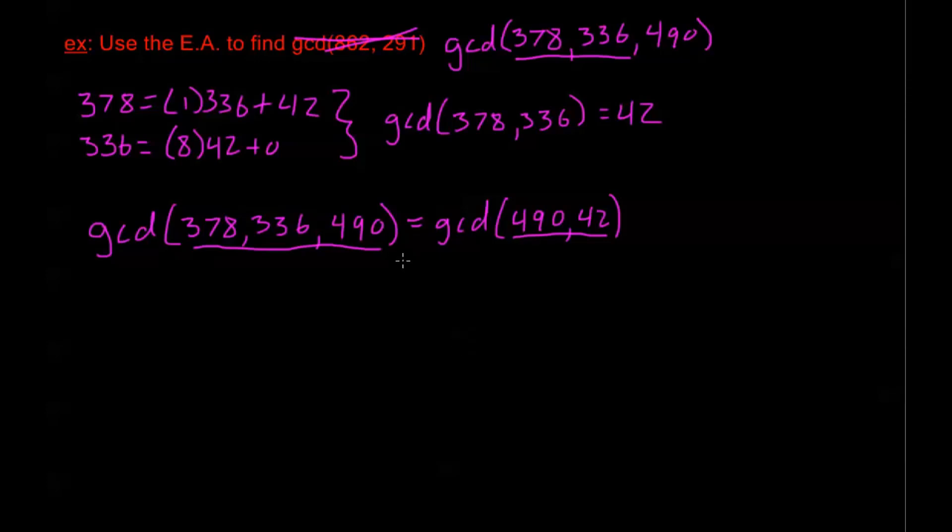And the greatest such divisor of these two numbers will be the greatest common divisor of these three numbers. Take a second to think about it if that's not clear to you right away. But, continuing on, now I can do the Euclidean algorithm with these two numbers.